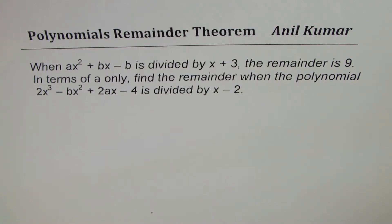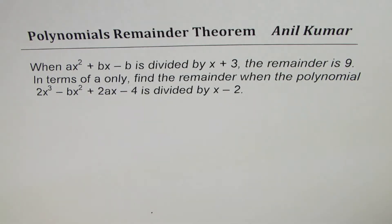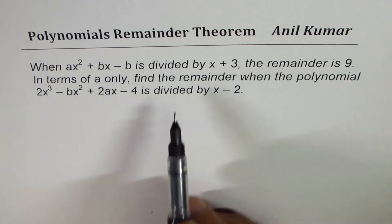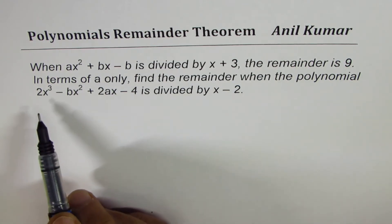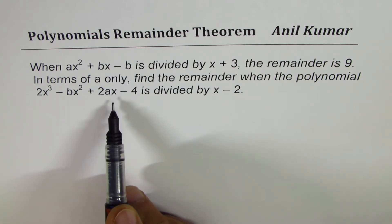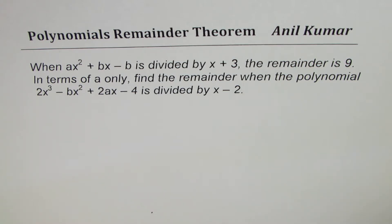The question is when ax squared plus bx minus b is divided by x plus 3, the remainder is 9. In terms of a only, find the remainder when the polynomial 2x cube minus bx square plus 2ax minus 4 is divided by x minus 2.